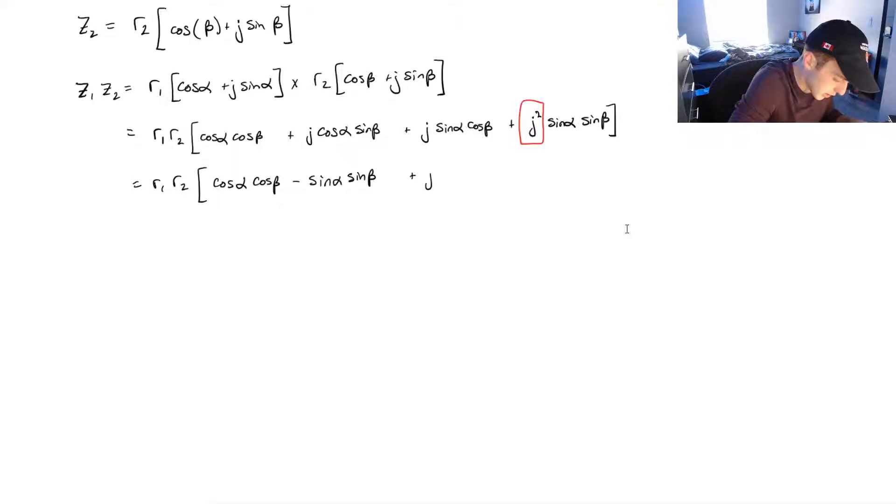And then we've got our imaginary terms. And I'm going to factor out the j just for readability. cos alpha sin beta plus sin alpha cos beta.